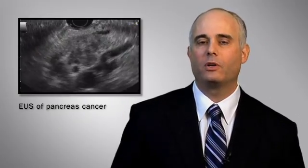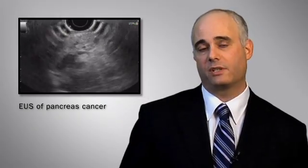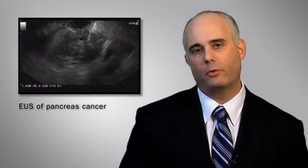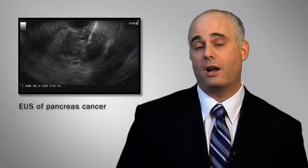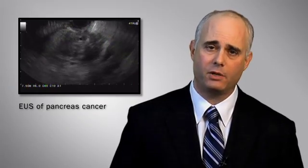EUS is done similarly to other endoscopic procedures. The patient receives a sedative so that they're comfortable throughout the procedure. The endoscope is then inserted either through the mouth or through the rectum, depending on what part of the body we want to take pictures of.